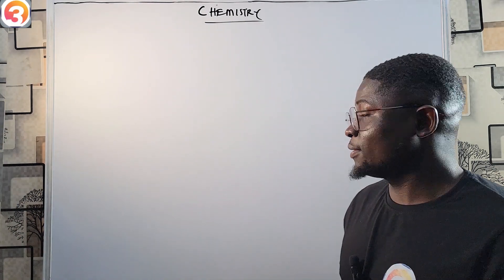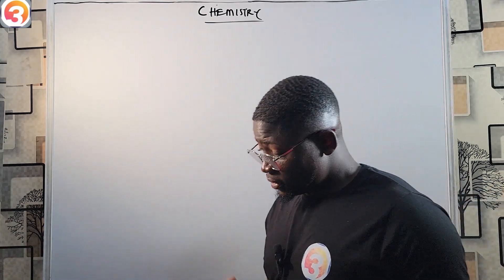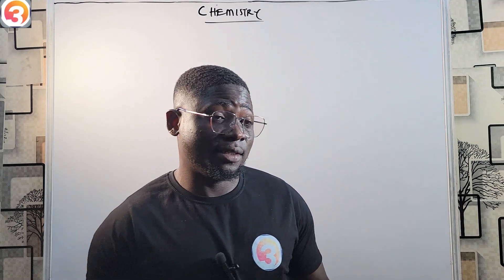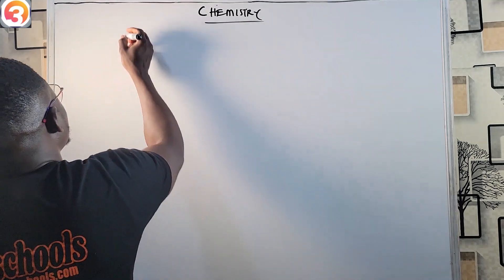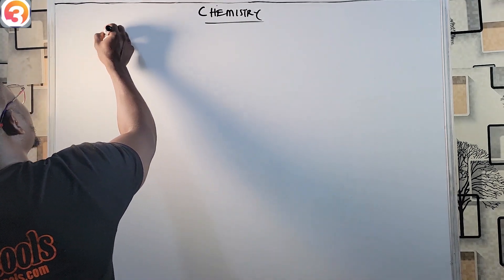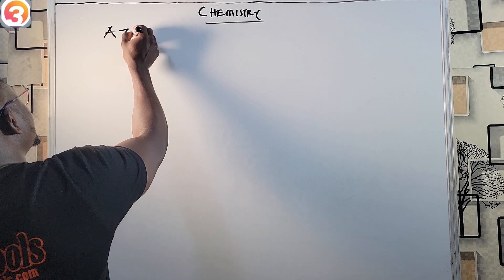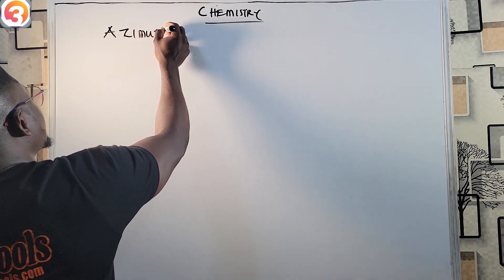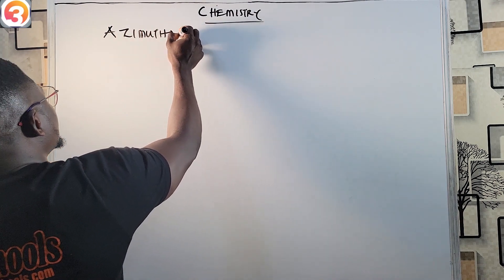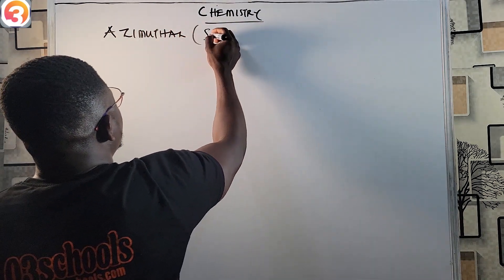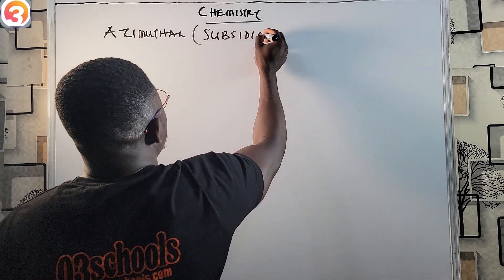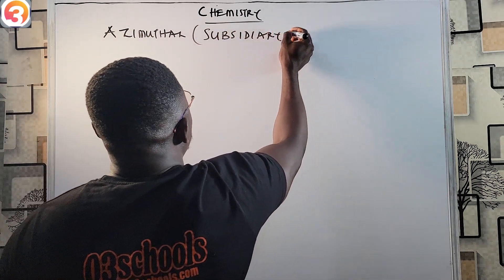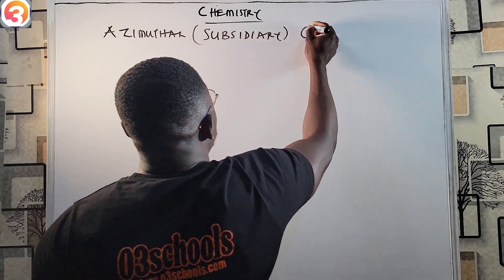Hello guys and welcome back to JAMB chemistry class. In this class I'm going to be looking at the azimuthal or the subsidiary quantum number.